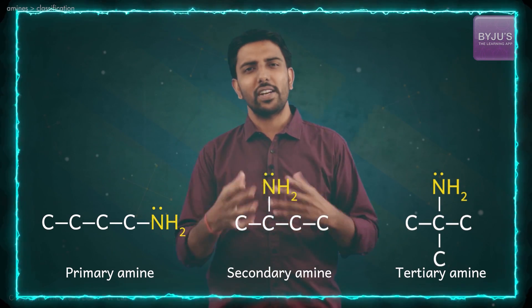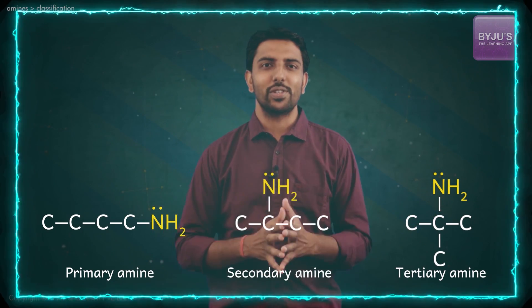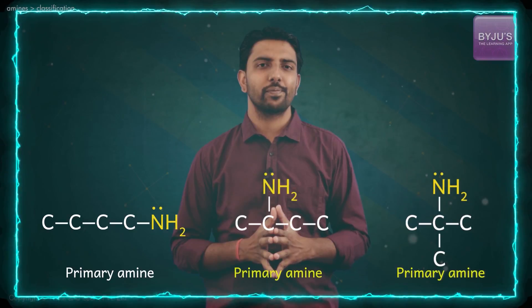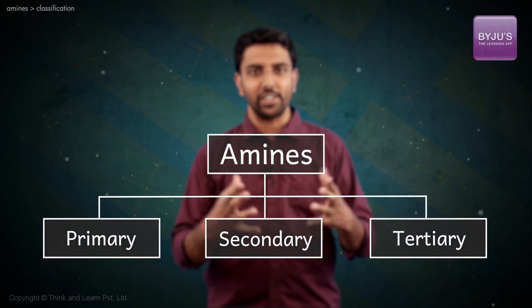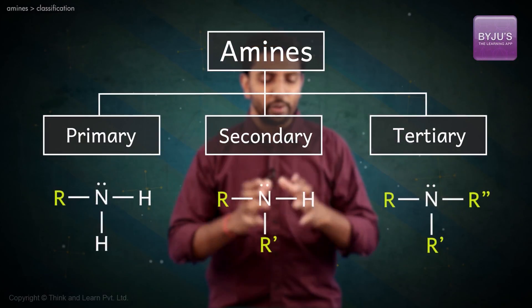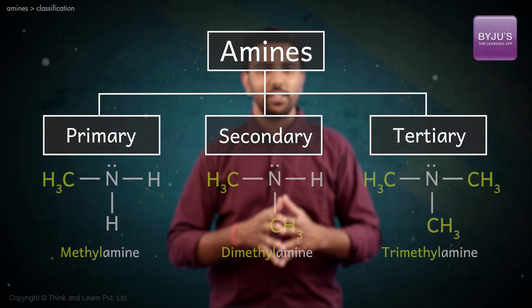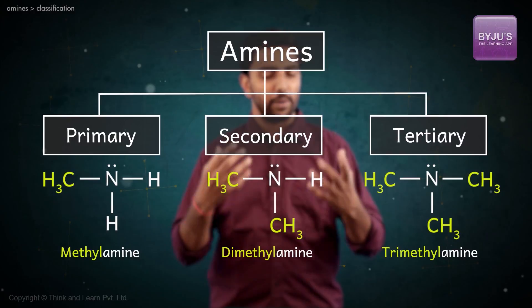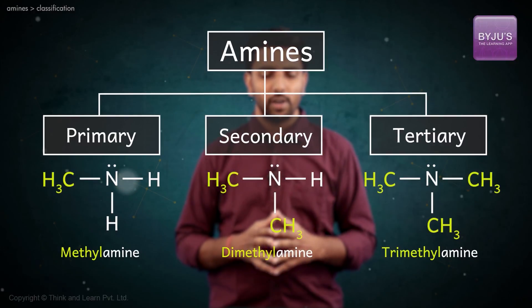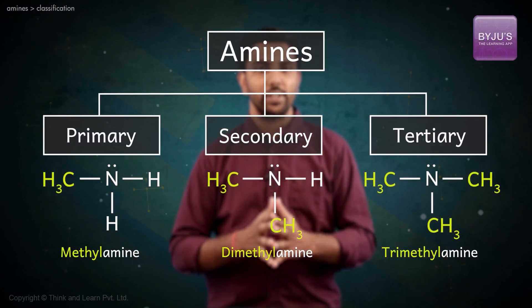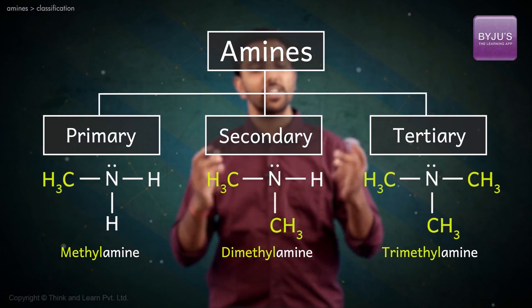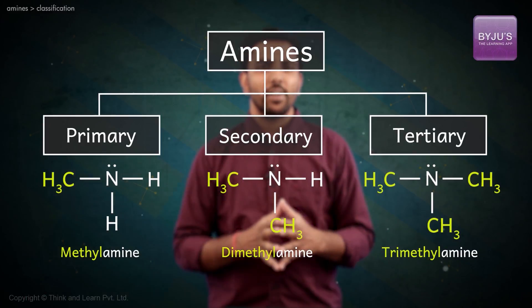Perhaps strangely, all these compounds happen to be primary amines. Hold your horses — let me explain. Amines are classified as primary, secondary, or tertiary depending on the number of organic substituents attached to the nitrogen atom. For instance, methylamine is a primary amine, dimethylamine is a secondary amine, and trimethylamine is a tertiary amine.